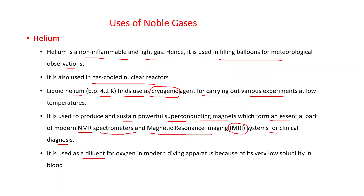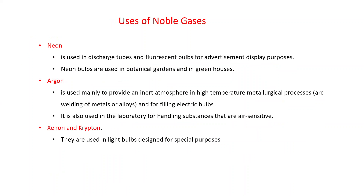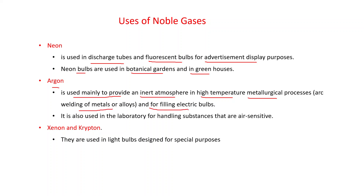Helium is used as a diluent for oxygen in modern diving apparatus because of its very low solubility in blood. Neon is used in discharge tubes and fluorescent bulbs for advertisement display purposes. Neon bulbs are used in botanical gardens and in greenhouses. Argon is used mainly to provide an inert atmosphere in high-temperature metallurgical processes such as arc welding of metals or alloys, and for filling electric bulbs. It is also used in the laboratory for handling air-sensitive substances. Xenon and krypton are used in light bulbs designed for special purposes.